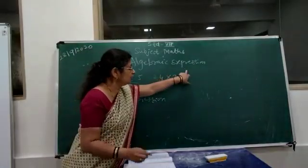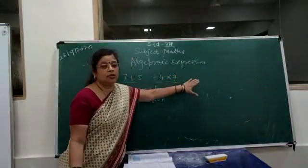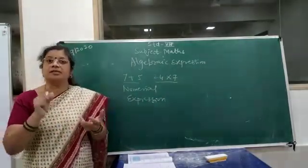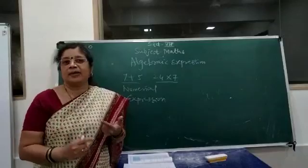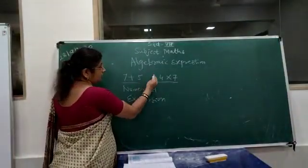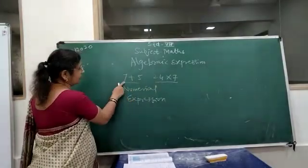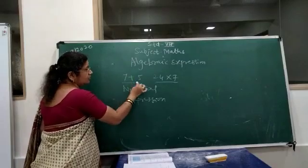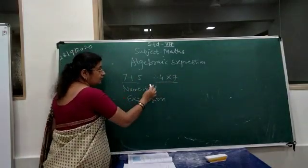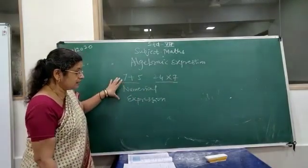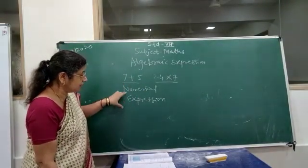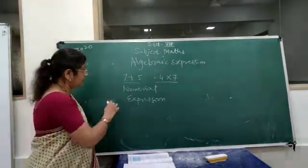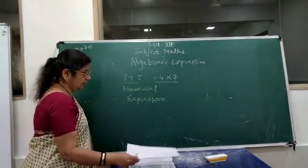Expression means a single or group of numbers or terms combined with addition, subtraction, multiplication, or division. For example, 7 plus 5, or 24 into 7. In these examples, every term in the expression is a constant, so we call this a numerical expression.